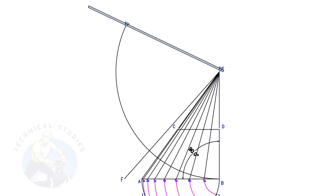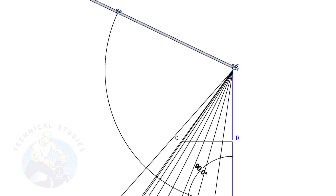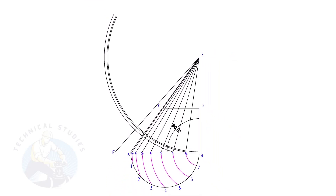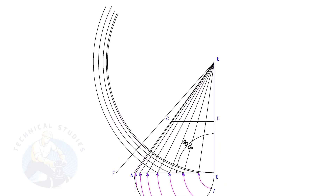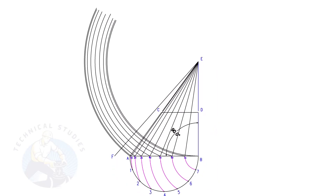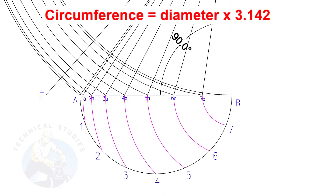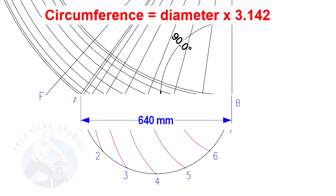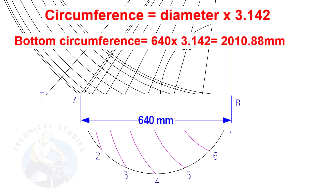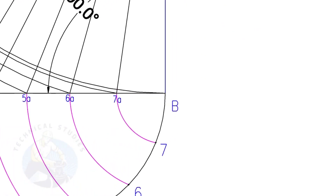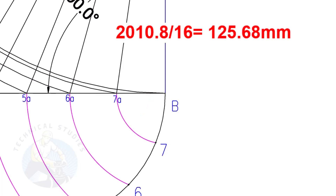Draw arcs EB, E7A, E7B, etc. Let us calculate the circumference of the bottom side. The formula is diameter multiplied by 3.142. Since the diameter is 640, multiply it by 3.142 — the answer is 2010.8 mm. To calculate the arc length of one segment, divide the circumference 2010.8 by 16. The length of one arc is 125.68 mm.